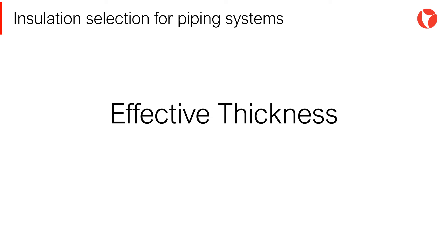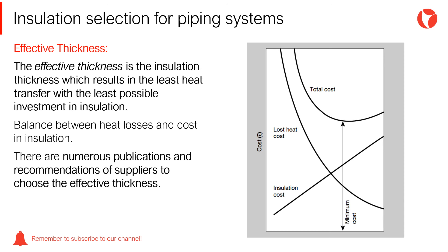It is neither possible nor economical to install thermal insulation so as to avoid all heat losses. The objective of insulation is to reduce heat transfer, not to eliminate it. The effective thickness is the insulation thickness which results in the least heat transfer with the least possible investment in insulation. It is the intersection of both curves — heat losses and cost of insulation — as seen in the figure.